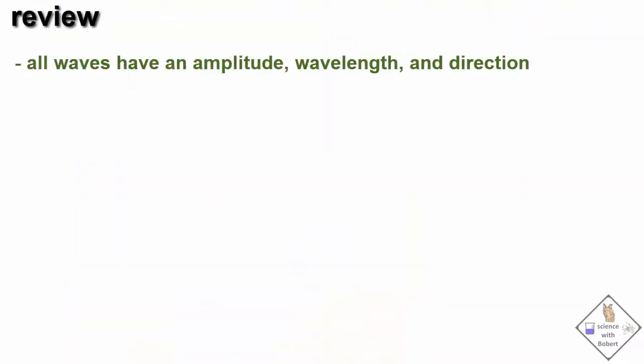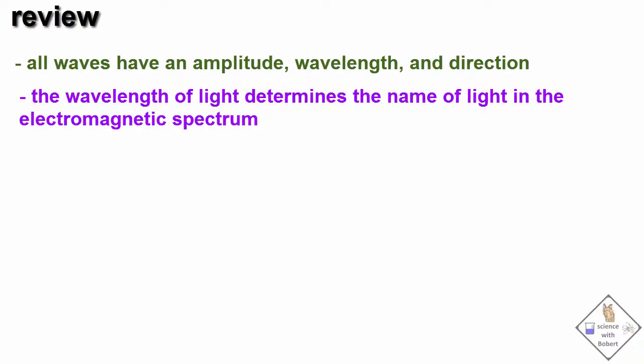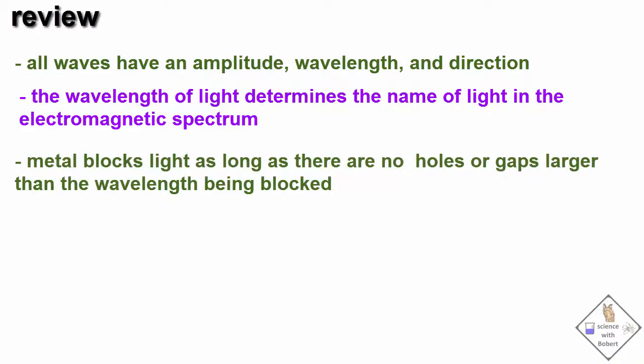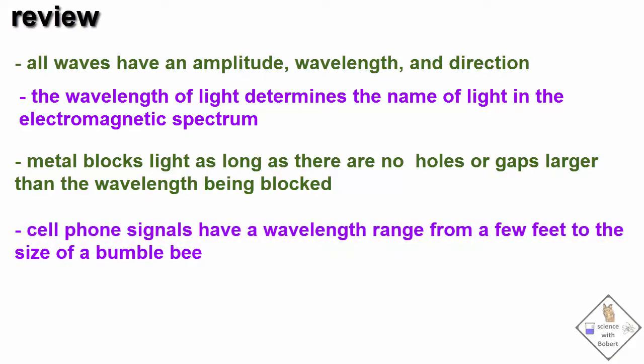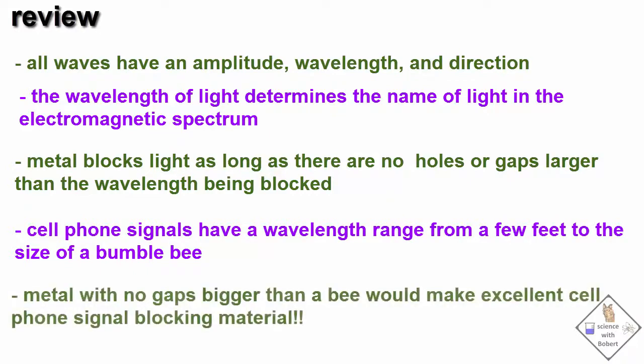Let's review. All waves have an amplitude, wavelength, and direction. The wavelength of light determines the name of light in the electromagnetic spectrum. Metal blocks light as long as there are no holes or gaps larger than the wavelength being blocked. Cell phone signals have a wavelength range from a few feet to the size of a bumblebee. So any cell phone signal blocker must consist of metal with holes or gaps no larger than roughly a bumblebee, otherwise it will not work.